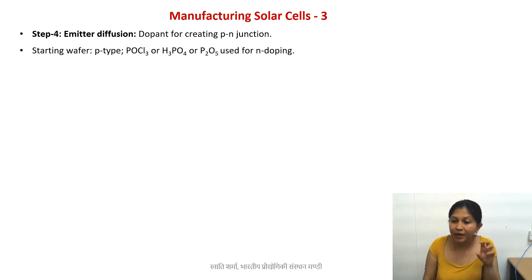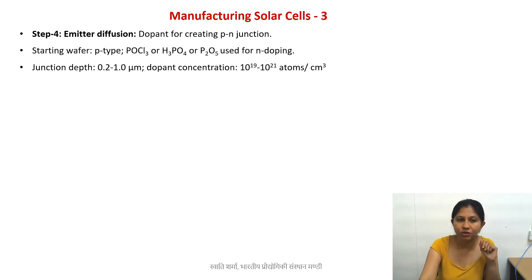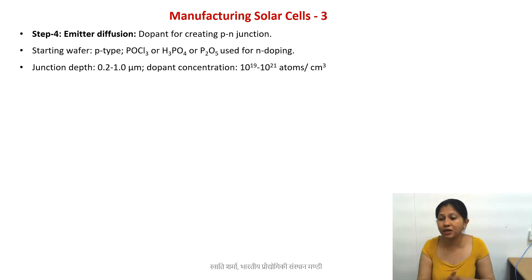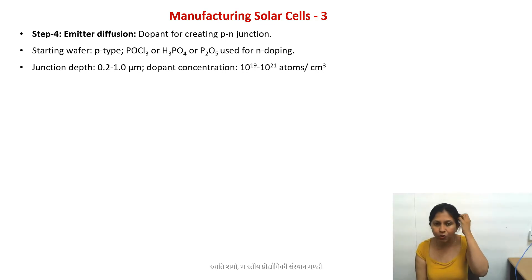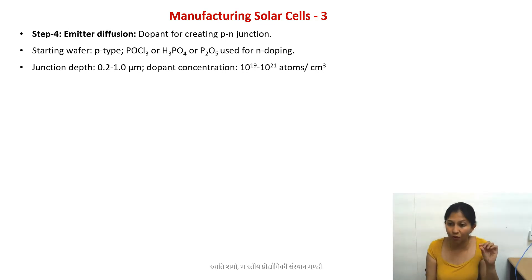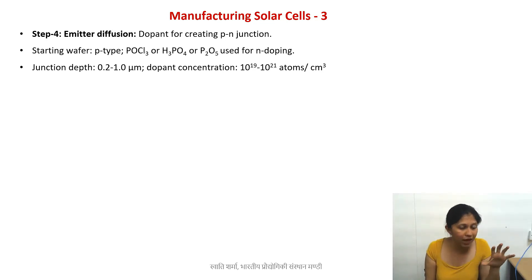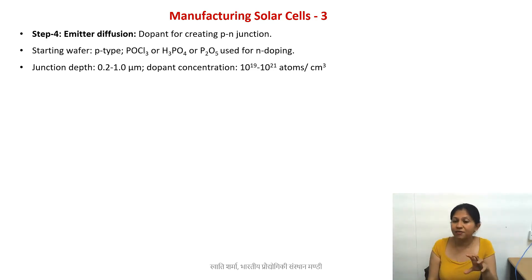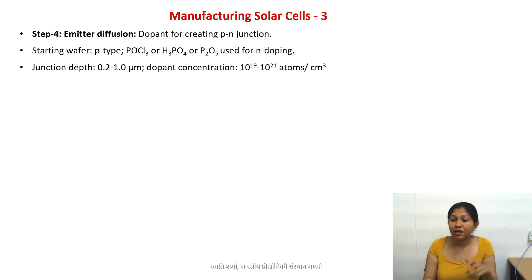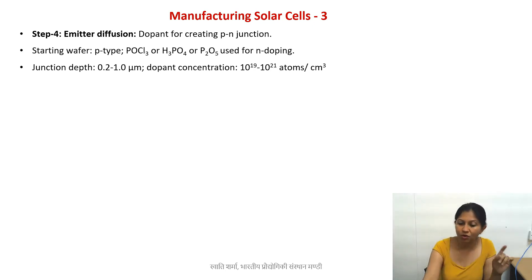How do we carry out this process? First of all, we need certain junction depths — we need 0.2 to 1 micrometer of junction depth. We also need a well-defined concentration, which is defined by the number of atoms of the dopant per cubic centimeter. So we need a very controlled process: not more, not less.